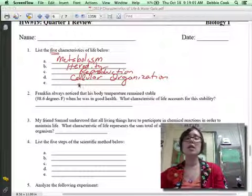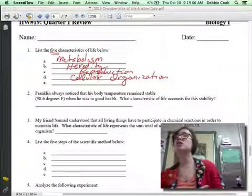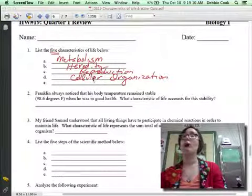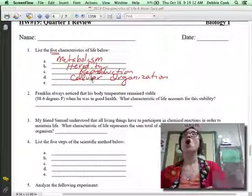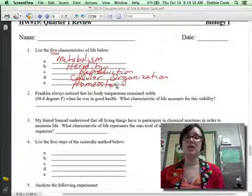Last one. E. Which one is it? So we have metabolism, heredity, reproduction, cellular organization. Starts with an H. It's a really big one. If you don't have it you die. Homeostasis. Very nice. So homeostasis. Excellent.